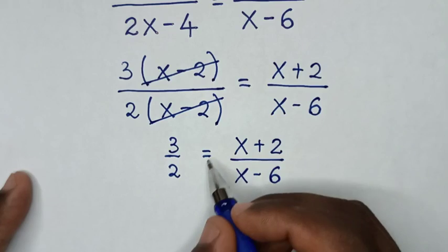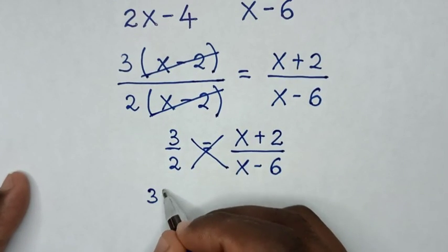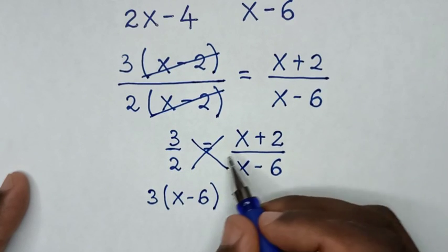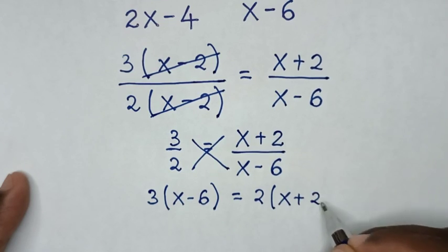Then we will cross multiply. So it will be 3 times x minus 6 is equal to 2 times x plus 2.